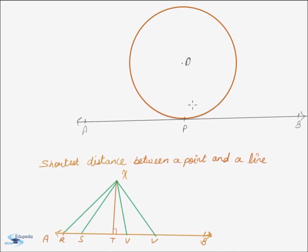A tangent is a line which intersects the circle at a single point. For AB to be a tangent to the circle, let the single intersection point be P. At P, there is no distance between the circle and the tangent. If we move slightly away on either side of P, there will be a distance between the corresponding part of the circle and the tangent, which will increase in magnitude as we move away from point P.